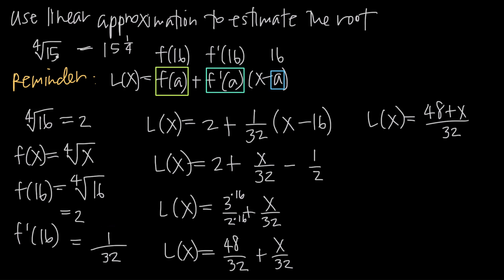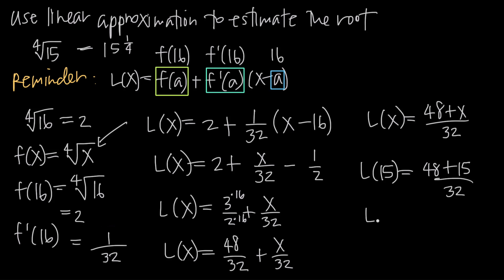To estimate the fourth root of 15, we plug x = 15 into our linear approximation equation: L(15) = (48 + 15) / 32 = 63/32. So 63/32 is our approximate value for the fourth root of 15. We could convert it to a decimal if we wanted, but 63/32 is the linear approximation answer.